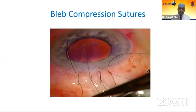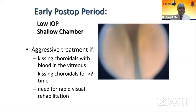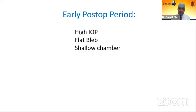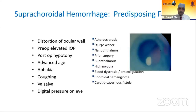Bleb compression sutures may be of some help if it is a fresh case. Aggressive treatment is required if there is lenticulocorneal touch, corneal decompensation, and bleb failure, or kissing choroidals. In the early post-operative period with high IOP, flat bleb, and shallow AC, think of suprachoroidal hemorrhage, aqueous misdirection, and pupillary block — these are the three notorious entities.